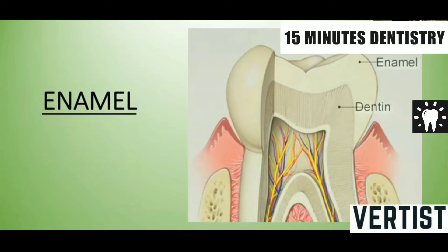Today we will start with the enamel. Enamel is the hardest calcified tissue in the body, which is developed from specialized cells called ameloblasts. They form the resistant covering of the enamel, as it consists of a highly mineralized structure which is resistant and bears maximum masticatory load.